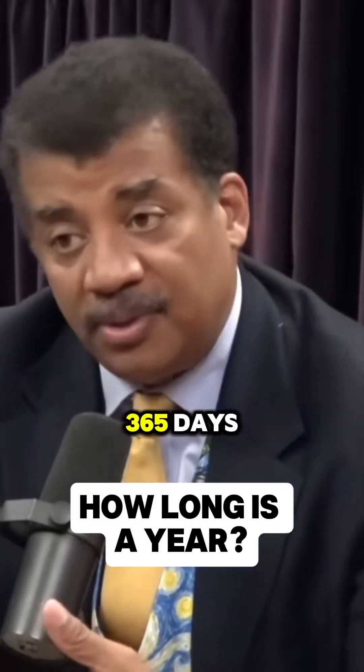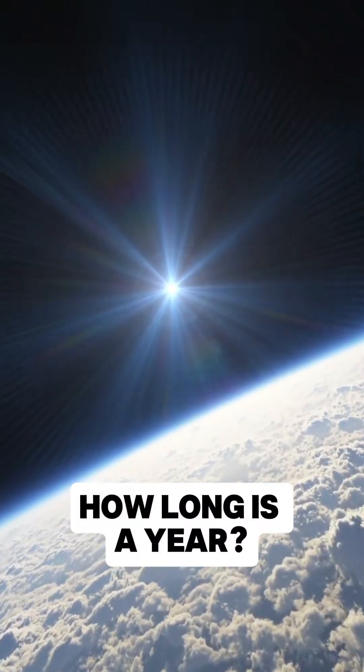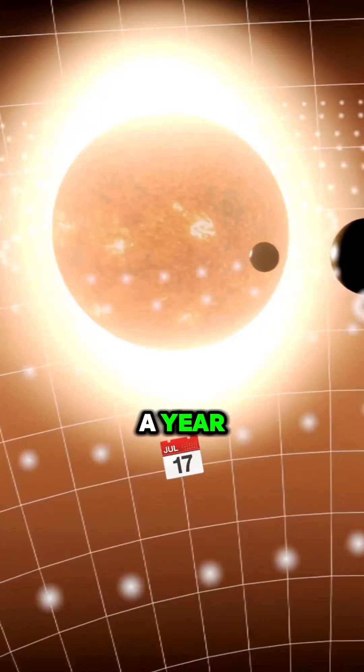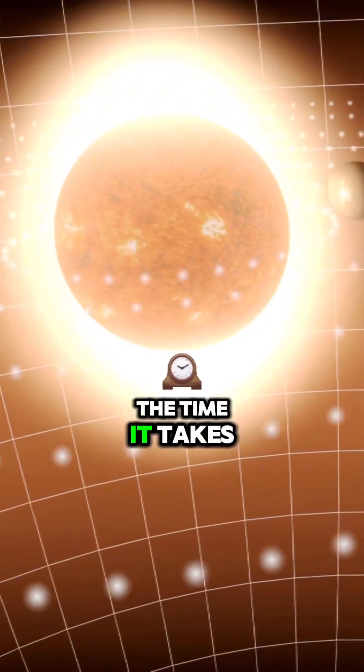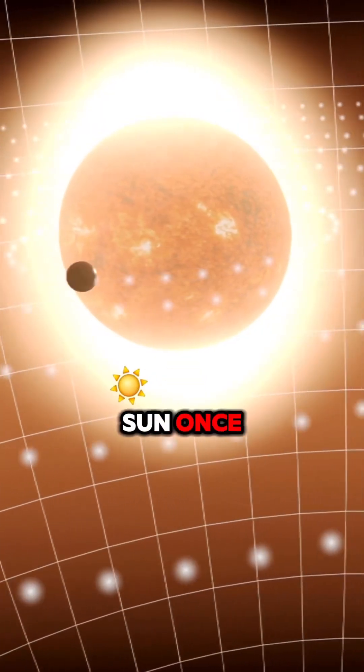You think a year is 365 days? Well, not quite. Let me blow your mind. A year, what we call a year, is supposed to be the time it takes Earth to go around the sun once. But here's the catch.